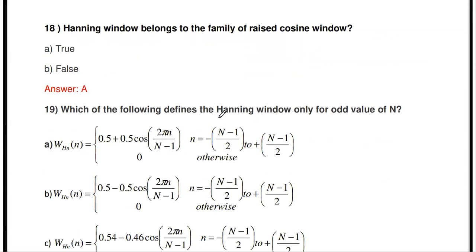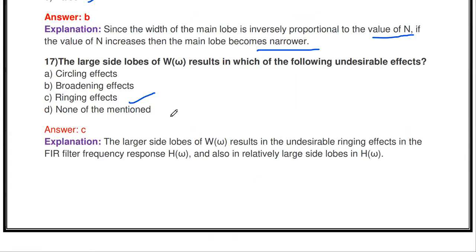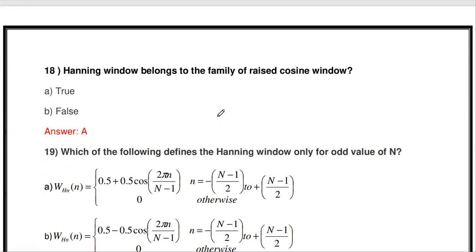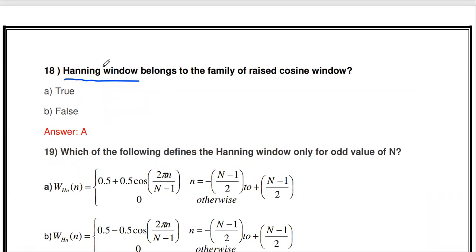The next type of window used to design the FIR filter is the Hanning window. The Hanning window belongs to the family of raised cosine windows — this is true. Both the Hanning window and the Hamming window belong to the family of raised cosine windows.